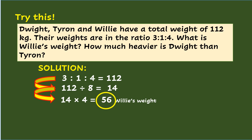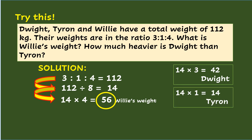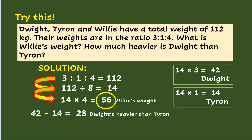Getting Dwight's weight: multiply 14 times 3 parts for Dwight, which equals 42. And for Tyron: multiply 14 times 1 part, which equals 14. Subtracting 42, which is Dwight's weight, minus 14, which is Tyron's weight, equals 28. So Dwight is heavier than Tyron by 28 kilograms.